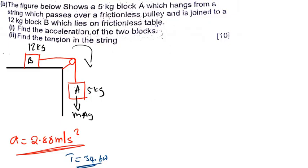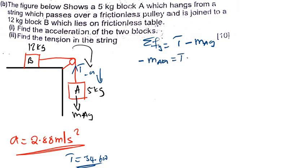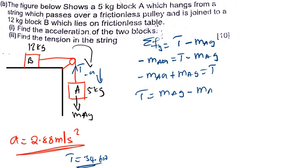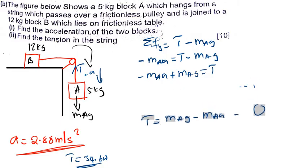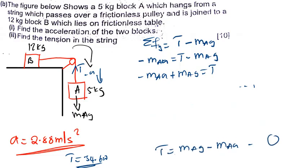Now for Method 2. First, draw the free body diagram for each block. For block A: the tension force acts upward, the weight MAG acts downward, and the acceleration is downward (negative A). The summation of forces in the Y direction: tension minus MAG equals negative MA times A. Rearranging: T equals MAG minus MA times A. We call this equation one, since we don't yet know the tension force or the acceleration.